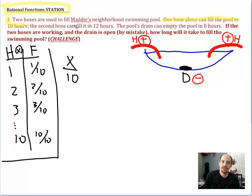Well if that's true then a second hose that can fill it in twelve hours should take x over 12 to fill it. Since it's twelve hours we have x over 12 to fill it with that second hose. The pool's drain can empty the pool in eight hours, so that's x over 8. Now this is drain, so it's a taking away effect, that's that negative we were referring to back here.